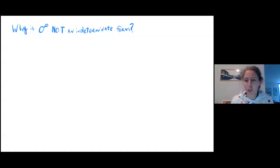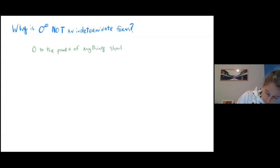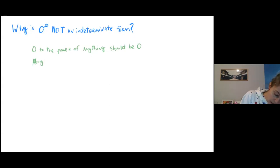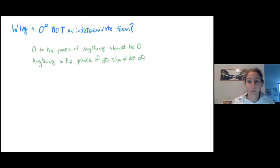Based on what we talked about in the past, it seems like it should be, because we talked about indeterminate forms as like battles. The thing is that zero to the power of anything should be zero, and anything to the power of infinity should be infinity. So it seems like maybe we should be having a similar kind of battle — which one wins, the zero or the infinity? But in this case, we actually aren't.